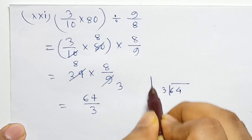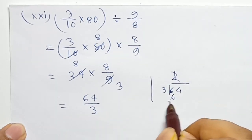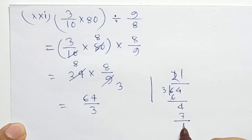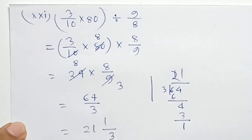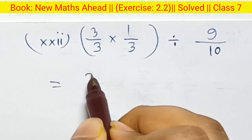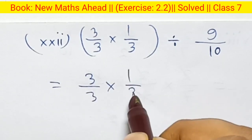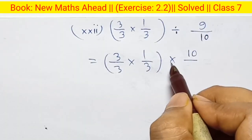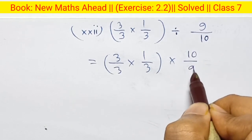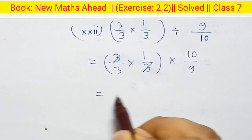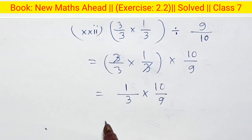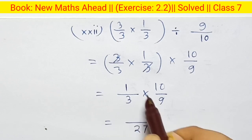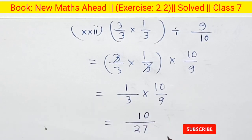64 divided by 3: three into 64 — one time 3, two times 6, 4 — remainder 1. Finally answer is 21 whole 1 by 3. Last question: 3 by 3 into 1 by 3, into 10 by 9. So 3 and 3 cancel. Finally: 1 by 3 multiply 10 by 9. So 3 into 9 is 27. One into 10 is 10. Answer is 10 by 27.